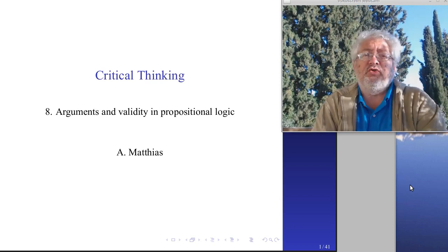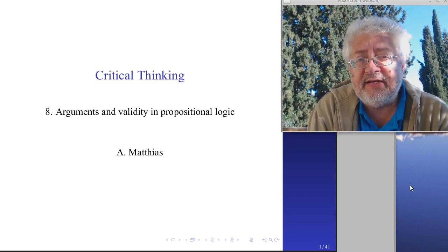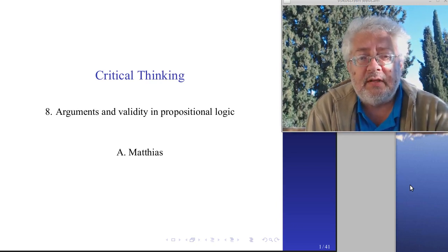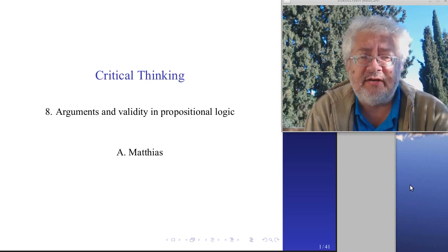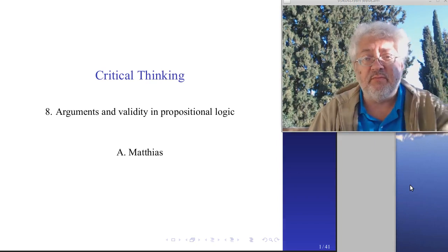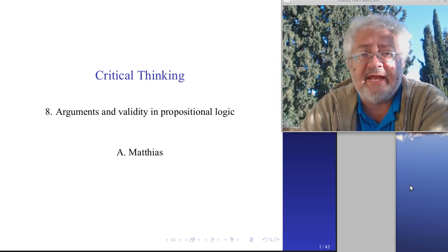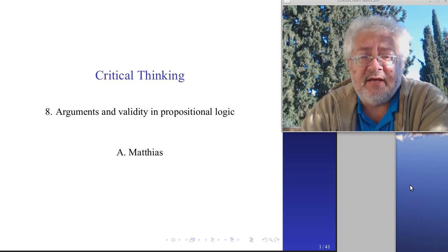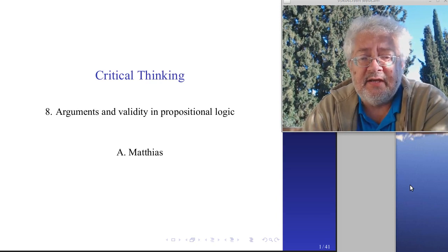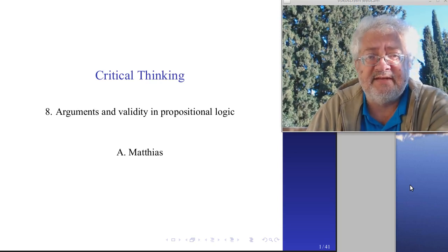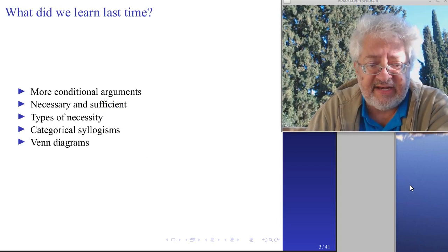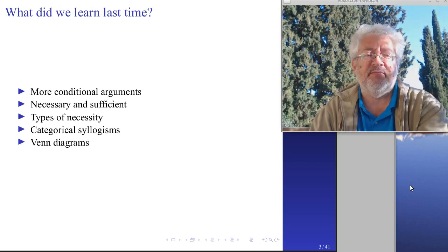We already talked about validity a little when we discussed conditional arguments and Venn diagrams - those are forms and methods with which we can say or find out whether an argument is valid. Valid generally means the conclusion follows from the premises in a correct way, but there are also more technical definitions of validity, and this is what we will cover now.